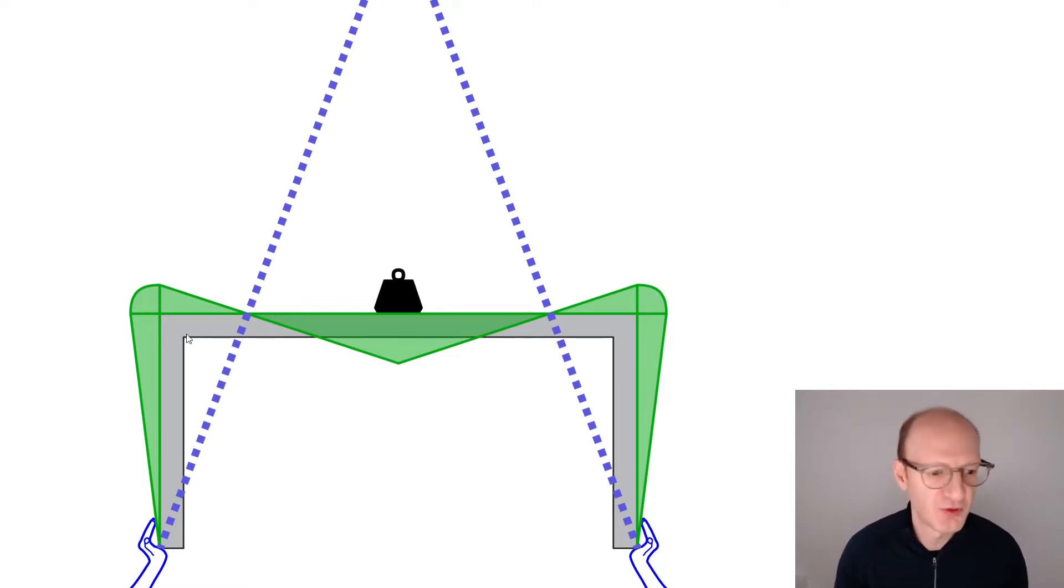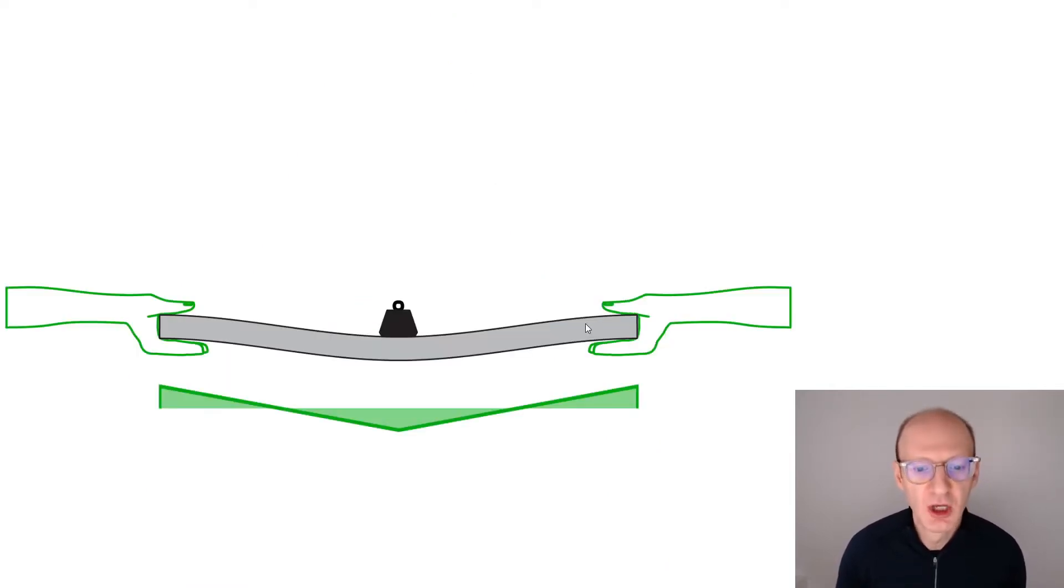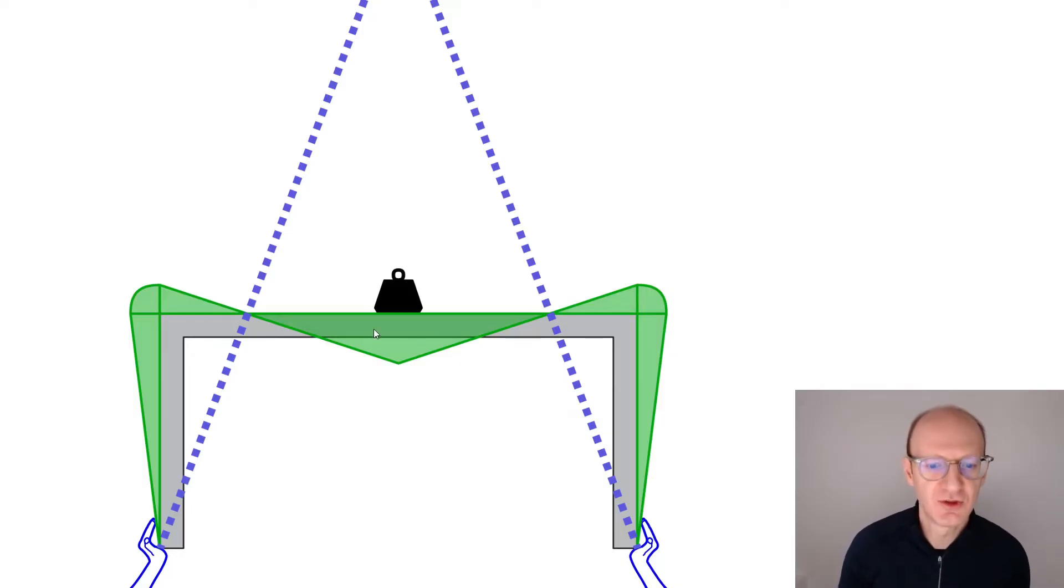And where have we seen this before? If we just look at the beam, we saw this before when we were looking at beams with fixed ends, represented by the hands clamping on the top and bottom to restrain movement at the ends of the beam. And that produced this bending moment diagram I covered in an earlier video.